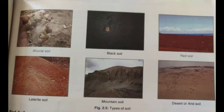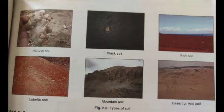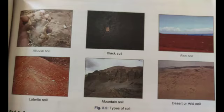Laterite soils are formed by intense leaching in the tropical regions due to heavy rainfall, making this soil very infertile. Desert soils are found in parts of Rajasthan and Gujarat. They lack moisture and humus and are less fertile, but irrigation facilities can make the soil fertile to some extent. The last type of soil is mountainous soil. It is found in the Himalayan regions and on the hill slopes with forest vegetation. This soil is formed due to the decaying of organic matter and is rich in humus but less fertile.